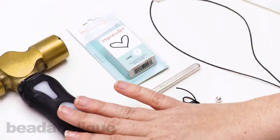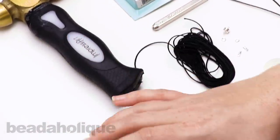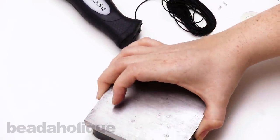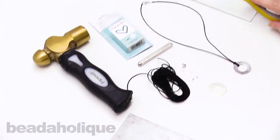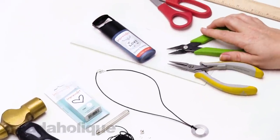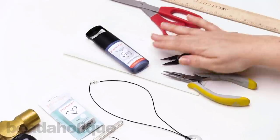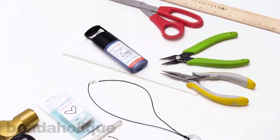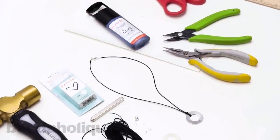I have my ImpressArt hammer, my bench block with my steel plate, and my rubber backing, and then for other tools we're just going to be using a pair of chain nose pliers, a pair of crimping pliers, a pair of scissors, a ruler, and you're also going to need a paper towel for this as well. So that is all the supplies, so let's go ahead and get started.